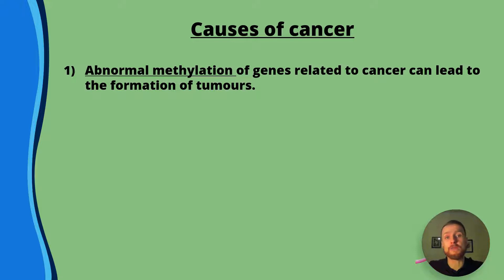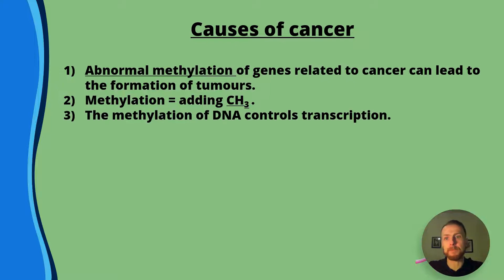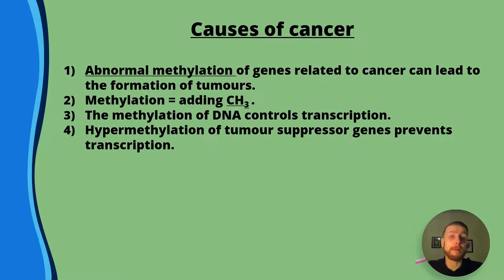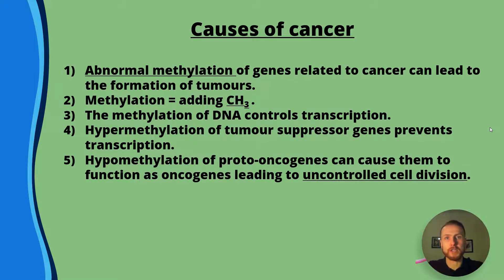Abnormal methylation of genes related to cancer can lead to the formation of tumours. Methylation is the adding of methyl groups (CH3). The methylation of DNA controls transcription: hypermethylation — meaning more methylation — of tumour suppressor genes prevents transcription. Hypomethylation — meaning low methylation — of proto-oncogenes can cause them to function as oncogenes, leading to uncontrolled cell division.